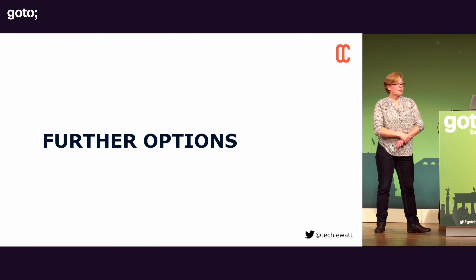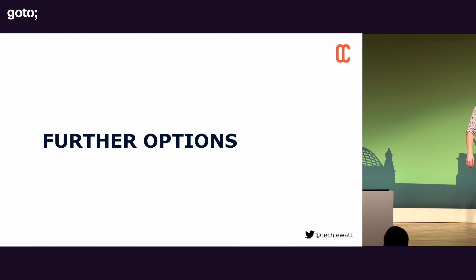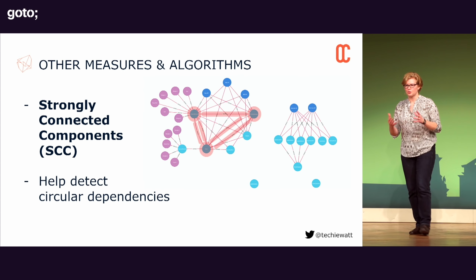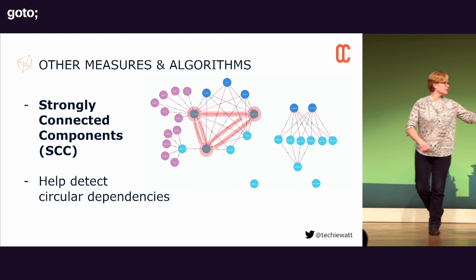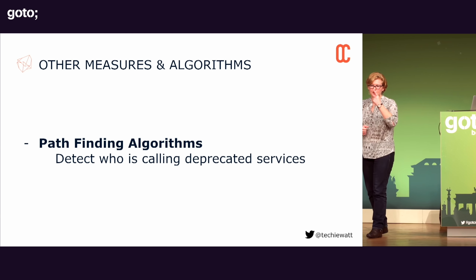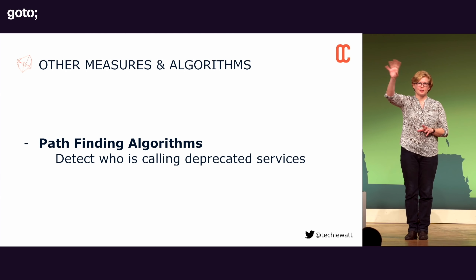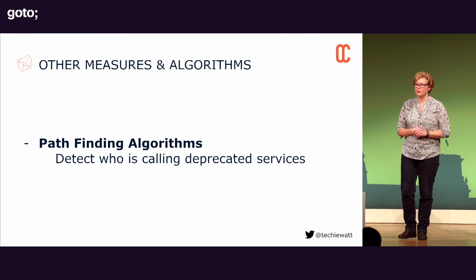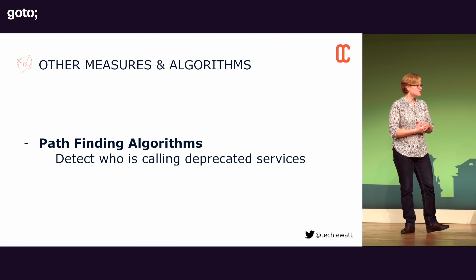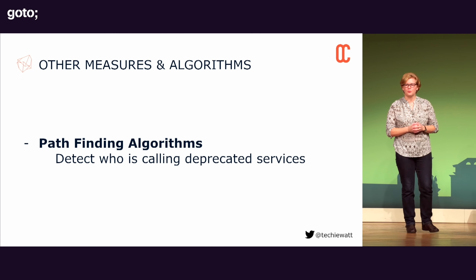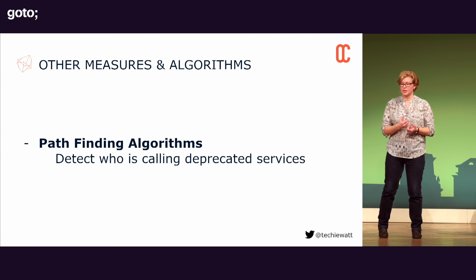There are other options for analyzing different aspects of your microservice architecture. You can do something like strongly connected components, which can help detect things like circular dependencies. You may also want to look at some of the pathfinding algorithms — this could help you see if you're calling deprecated services. You might think you've deprecated something, but when you look at the paths, you might find there is still a way to get to that service. Being able to extract that information into a graph database that you can analyze yourself is quite important.